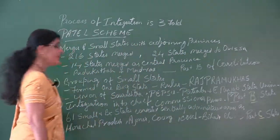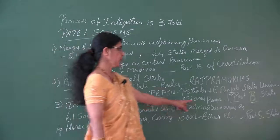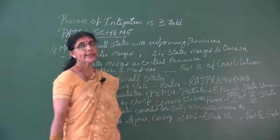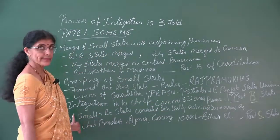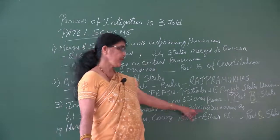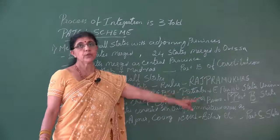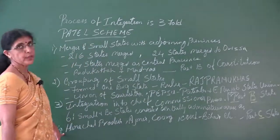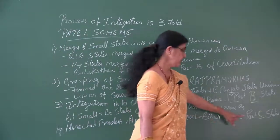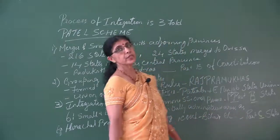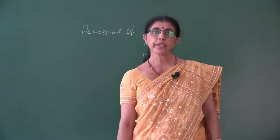The third method was integration into the chief commissioners' province — that is, all 61 smaller states which were earlier centrally administered areas would be converted into a chief commissioners' province. Examples include Himachal Pradesh, Ajmer, Coorg, and Coch Bihar. All of these together are called Part C states. All the states acceded to join India, whereas three states refused: Junagadh, Hyderabad, and Kashmir.